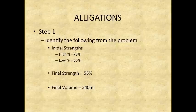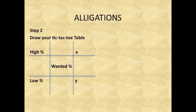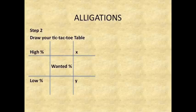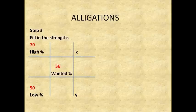Step 2: Draw your tic-tac-toe table. This is where you will enter your high percent, your low percent, your wanted percent, your X and your Y, just as it is depicted in this picture. Step 3: Fill in the strengths — under high percent enter 70, under low percent enter 50, under wanted enter 56.